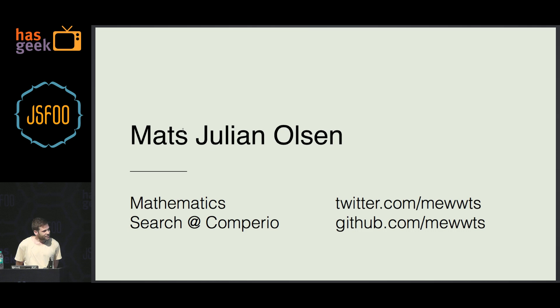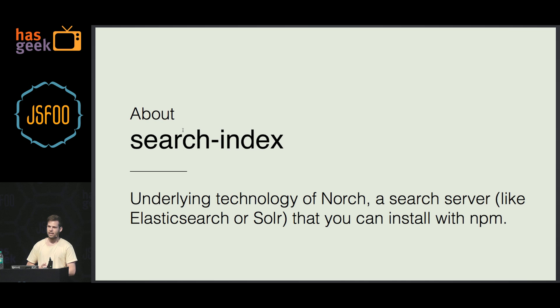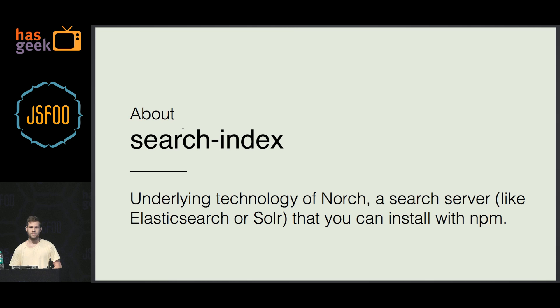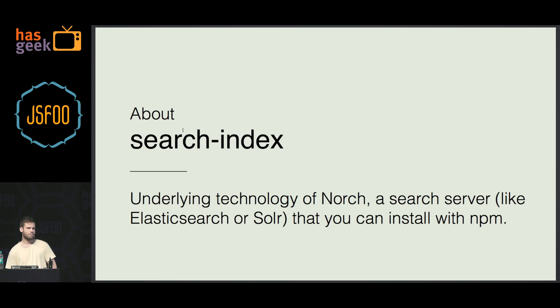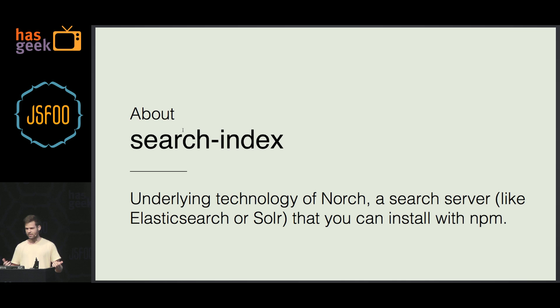Search index is a project that saw light in 2013 by a good friend and colleague of mine, Fergus MacDowell. It was originally the underlying technology of Norch — Norch is a search server, like Elasticsearch and Solr, that you can install with NPM. Elasticsearch and Solr are heavy Java machines that need a couple of servers, and Fergus thought you should be able to have search by simply NPM installing it.